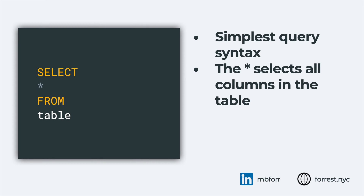SELECT is basically telling you that you want to retrieve data from a specific table. Star tells you it's going to select all the columns in the table. FROM says here's where I want to grab that data from, and then you provide a table name. This is generic SQL syntax — depending on whether you're using PostGIS, a different data warehouse, or a SQL server, it may look slightly different, but this will be pretty standard anywhere you go.